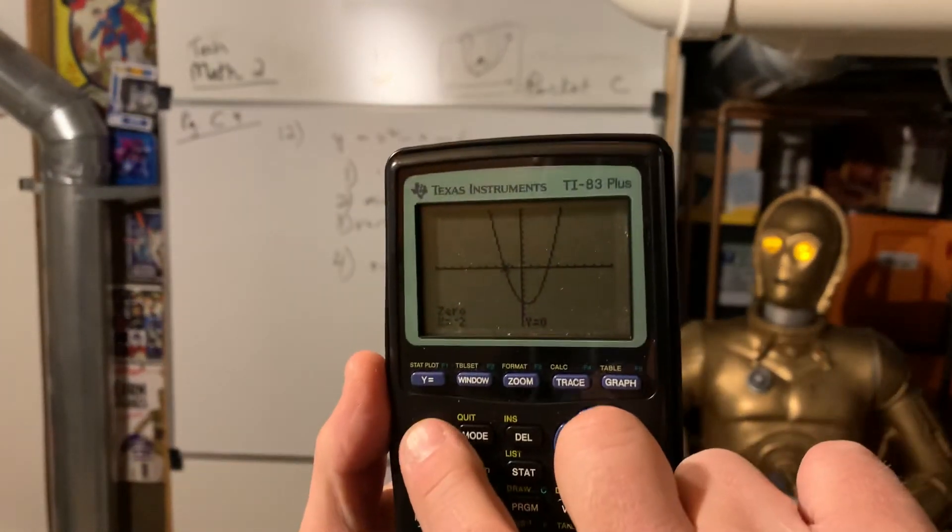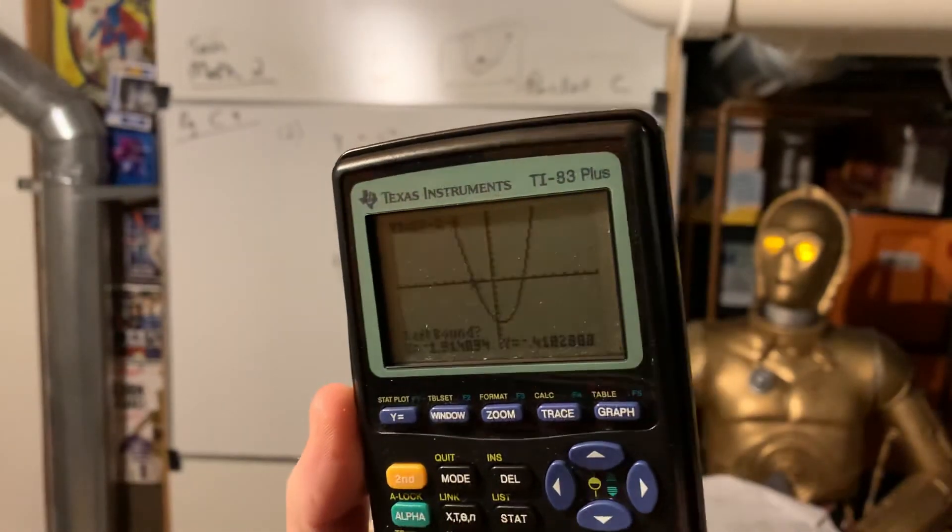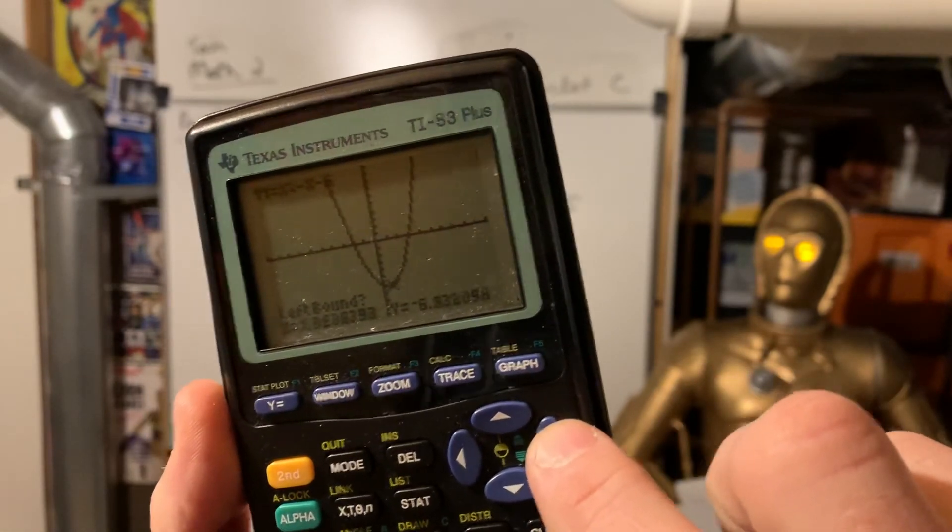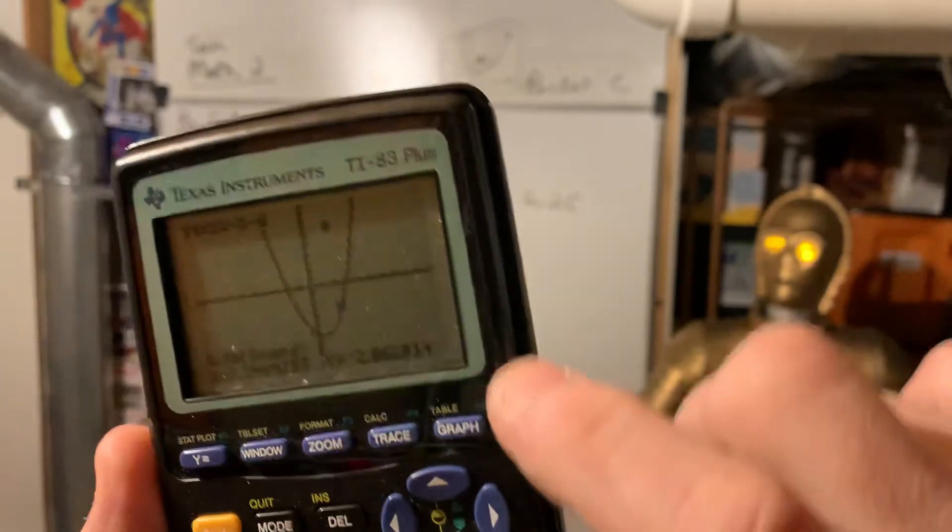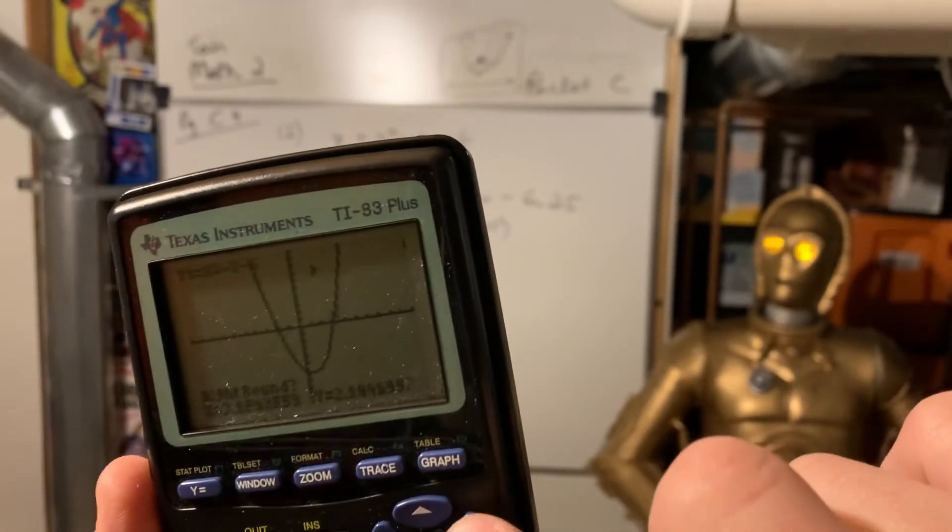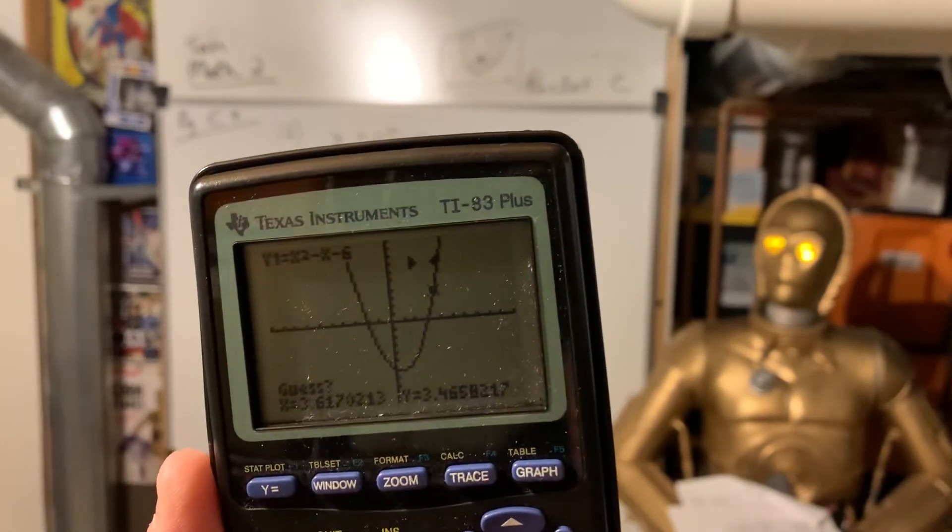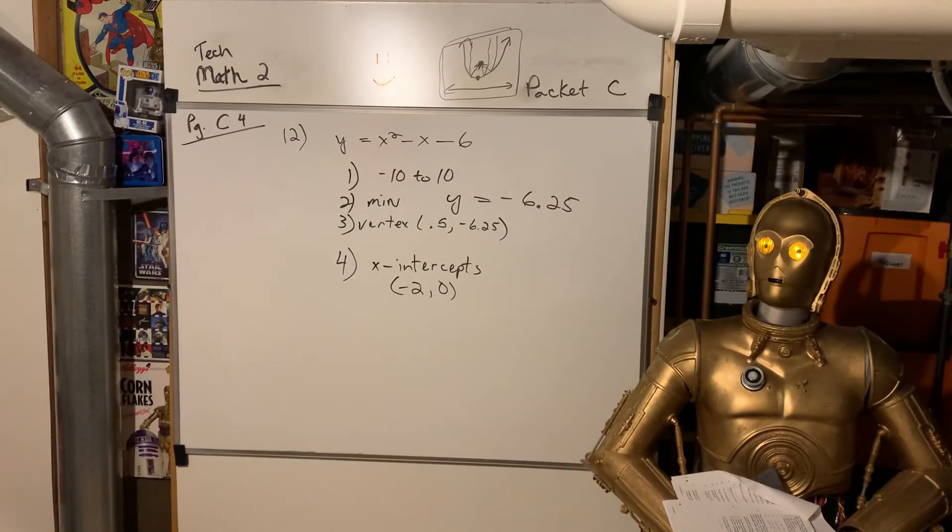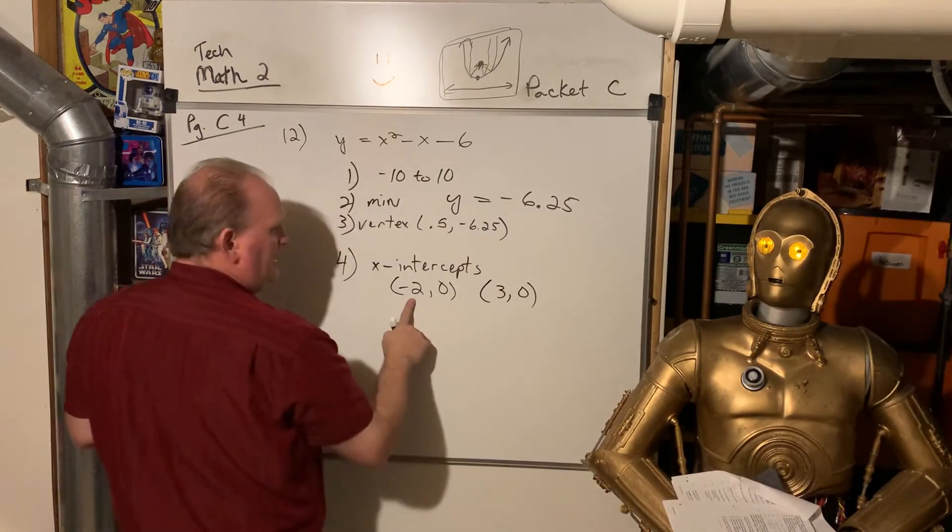Now we have to find the other. So we do 2nd, calculate, go down to 0, you hit enter. And this time we want to right-click it until it is below the x-axis, hit enter. And so it sets it. And then right-click it until it is above the x-axis, hit enter. And then just hit enter again. And it reads out 3, 0. So those are the x-intercepts. It crosses the x-axis at negative 2 and 3.